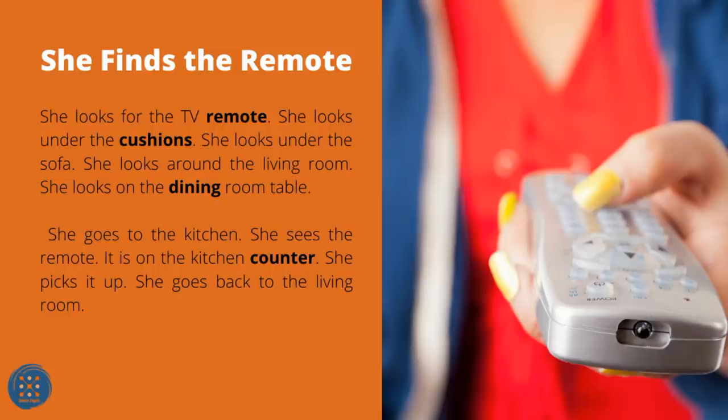She Finds the Remote. She looks for the TV remote. She looks under the cushions. She looks under the sofa and around the living room. She looks on the dining room table. She goes to the kitchen and sees the remote — it is on the kitchen counter. She picks it up and goes back to the living room.